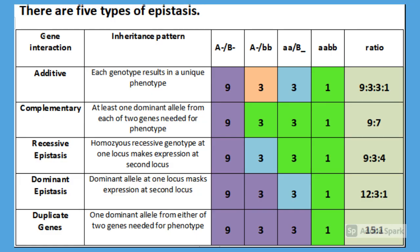There are five types of epistasis: additive, complementary, resistive epistasis, dominant epistasis, and duplicate genes. You can find more information such as inheritance patterns and genotypic ratios in the figure provided.